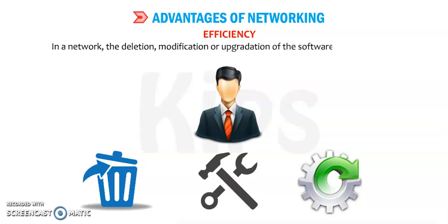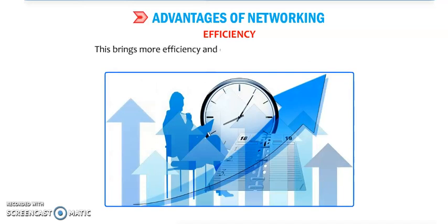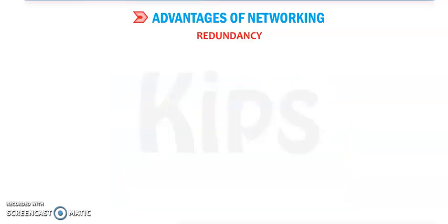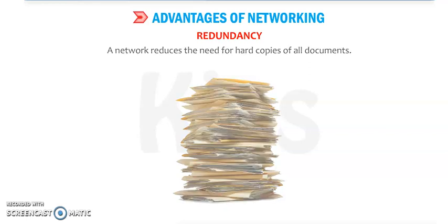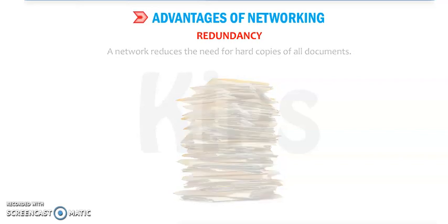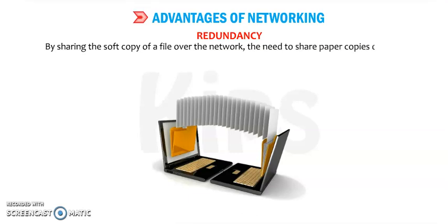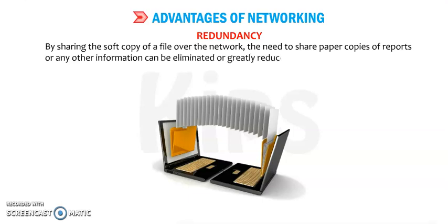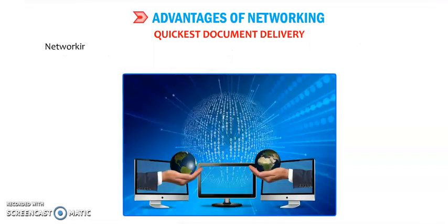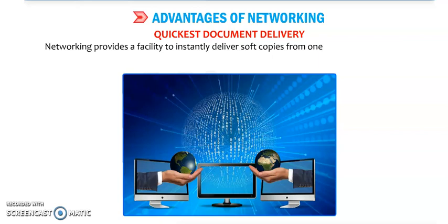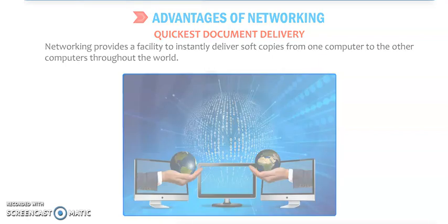Next is efficiency. In a network, deletion, modification, and updating of the software data is done at a single point only, which brings more efficiency and effectiveness into a working system. Next is redundancy — networking reduces the need for hard copies of all documents. By sharing the soft copy of a file over the network, the need to share paper copies of reports or any other information can be eliminated or greatly reduced. Next is quickest document delivery — networking provides a facility to instantly deliver a soft copy from one computer to other computers throughout the world.